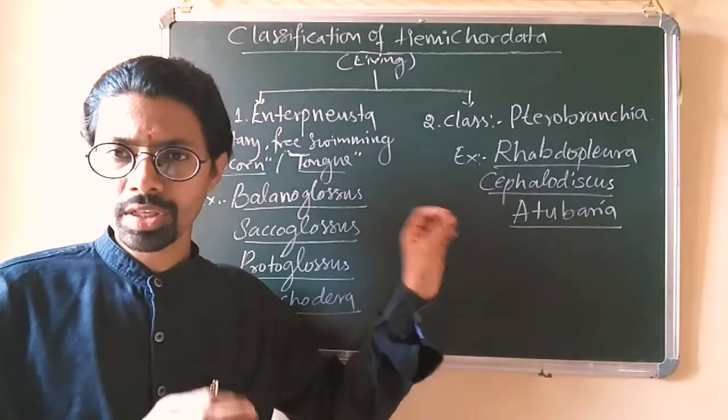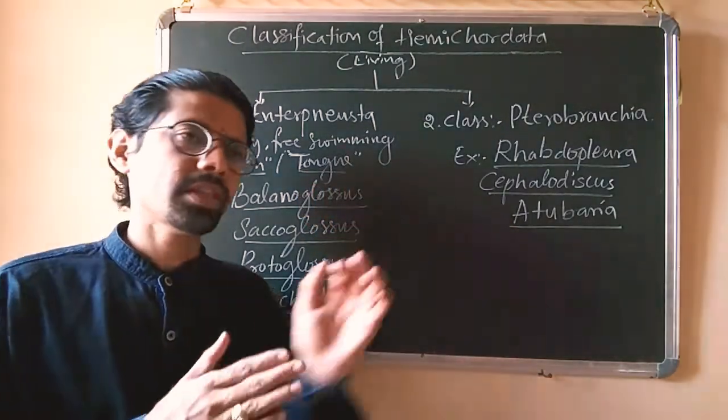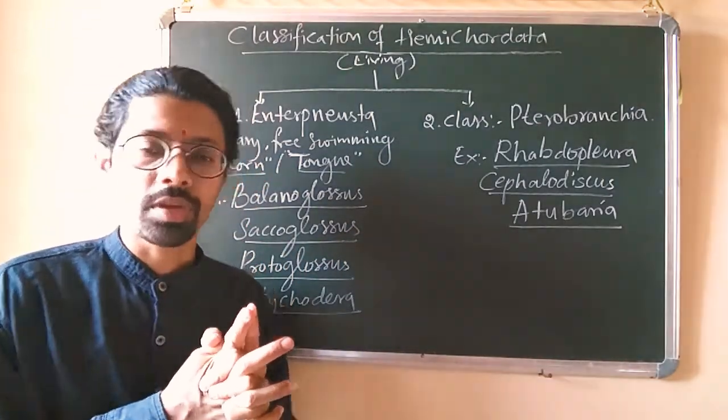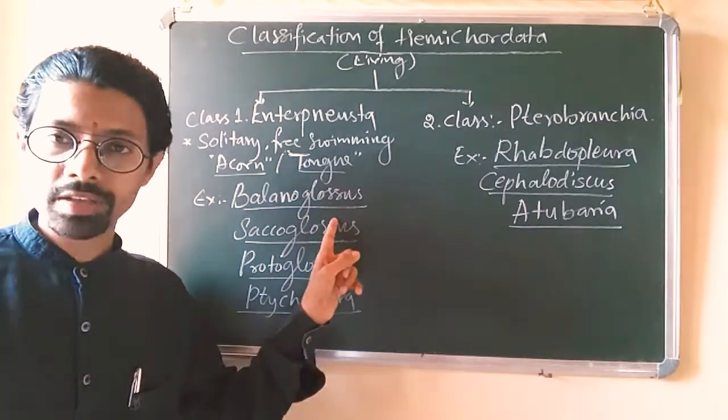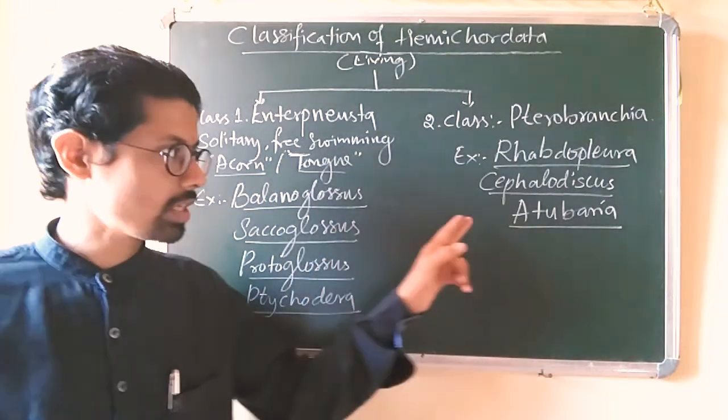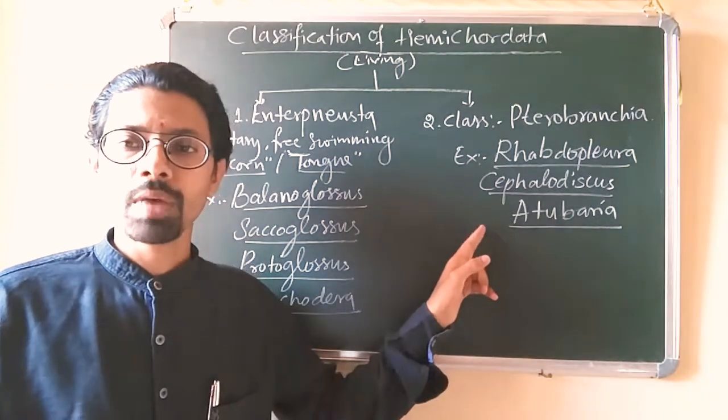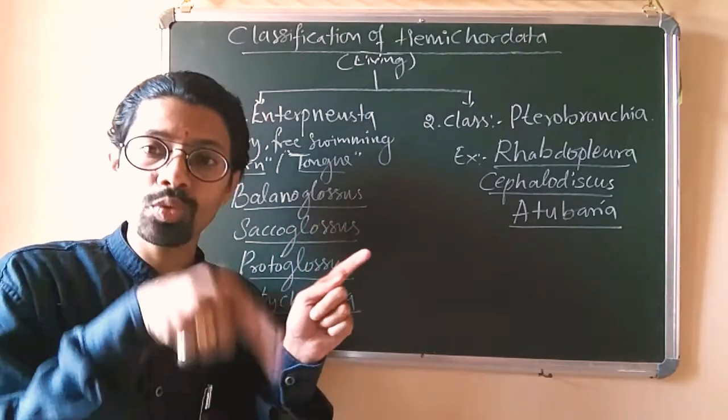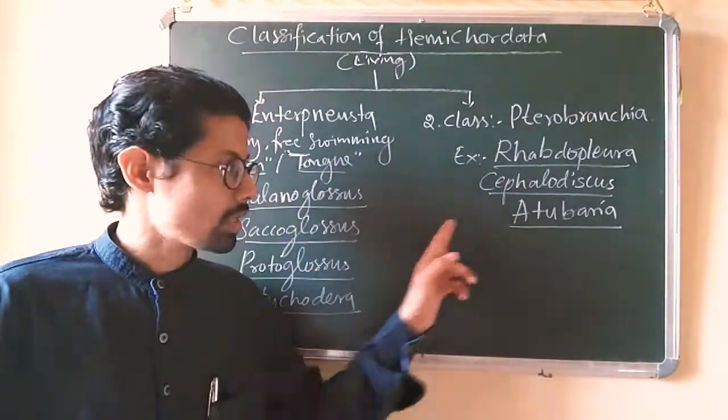Secondly, if you talk about the other characteristics, the digestive system: Here, the digestive system was straight and they had anus and mouth at opposite ends, but here the anus and mouth open at similar region or same side because the digestive system is U-shaped.